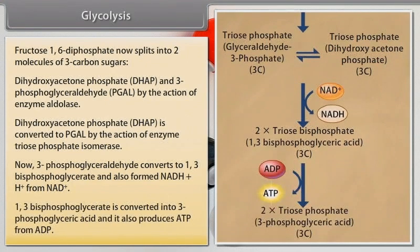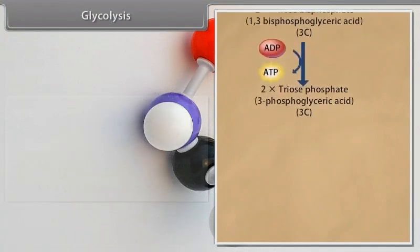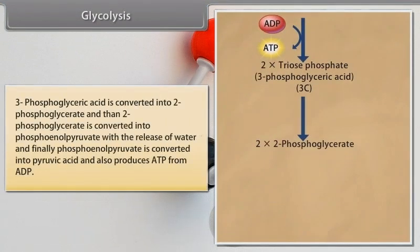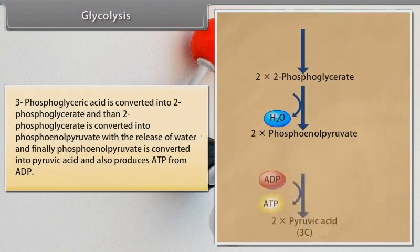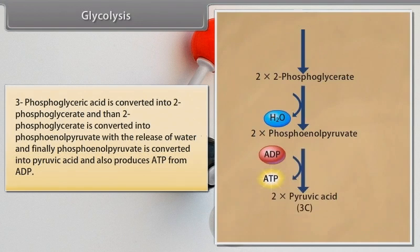1,3-biphosphoglycerate is converted into 3-phosphoglyceric acid and it also produces ATP from ADP. 3-phosphoglyceric acid is converted into 2-phosphoglycerate, then 2-phosphoglycerate is converted into phosphoenolpyruvate with the release of water, and finally phosphoenolpyruvate is converted into pyruvic acid and also produces ATP from ADP.